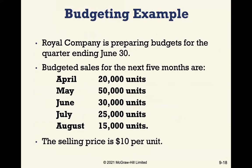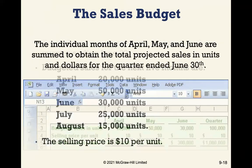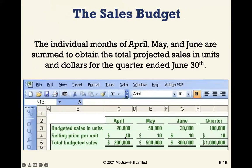We're going to go through a big example for Royal Company, which is preparing budgets for the quarter ending June 30th. Budgeted sales for April, May, and June are 20,000, 50,000, and 30,000 units per month respectively, at a selling price of $10 per unit. For the sales budget, the individual months are summed up to obtain total projected sales in units and dollars for the quarter — resulting in total budgeted sales for the quarter.